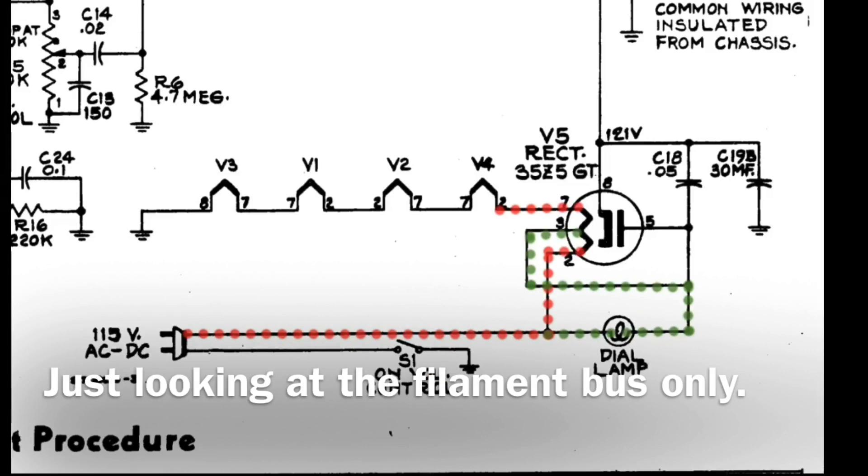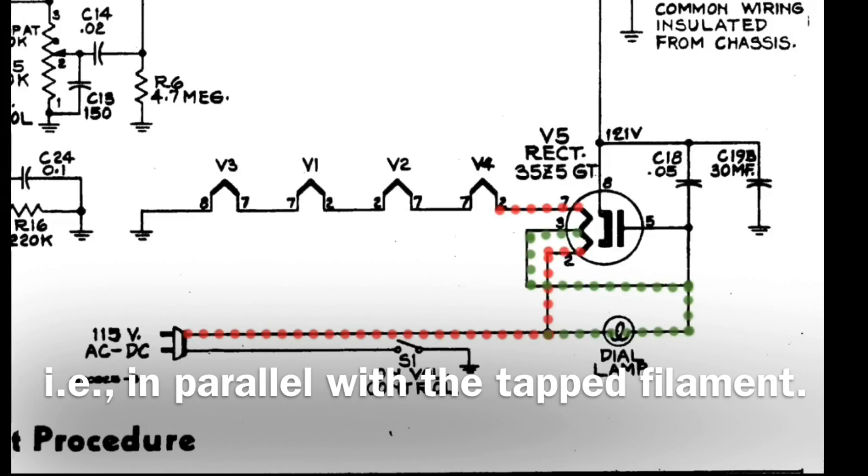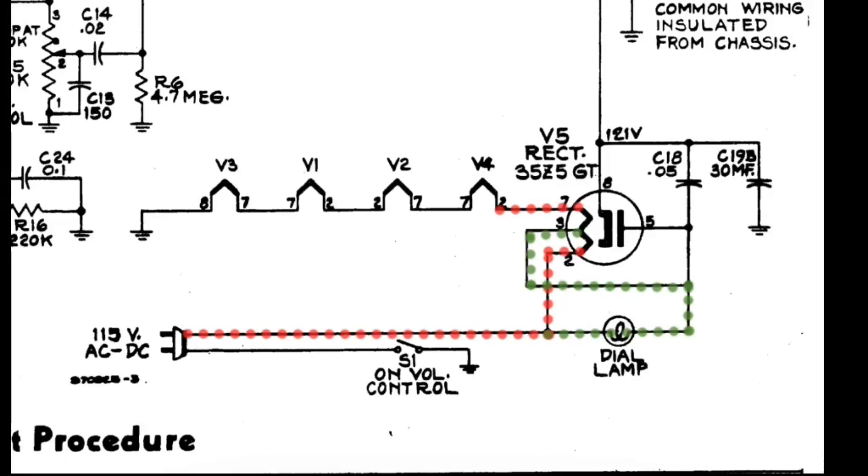So you can see here when the AC comes in - that'd be the hot side - we're connecting to pin number 2 of the rectifier tube and also to the pilot lamp. In our case, that type 47, through it to pin 3 of the rectifier. As I mentioned earlier, I was talking about the pilot lamp. You can see in this case, the current itself is divided between the filament tap, pins number 2 and 3 on the rectifier tube, and then that current continues to flow from pin 3 back over to pin 7, over to pin number 2 of the 50L6 in our case, which is called out as V4 here on the schematic.